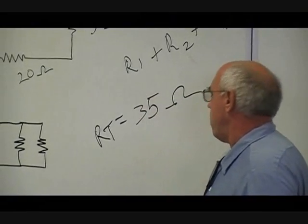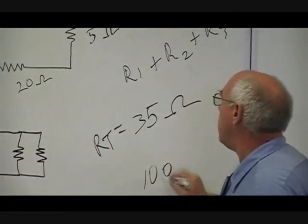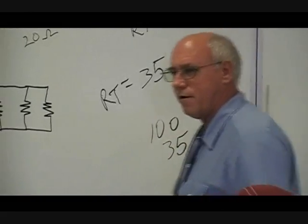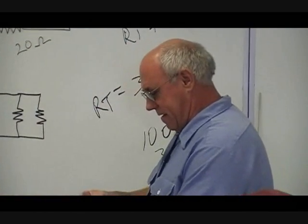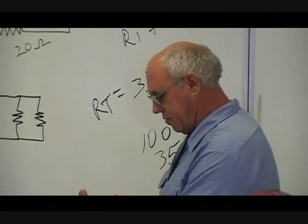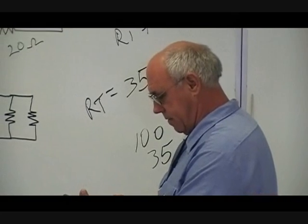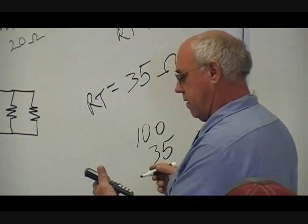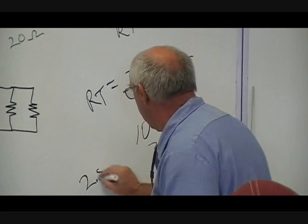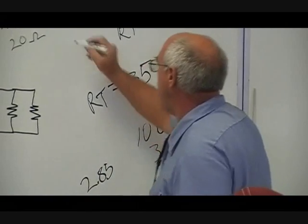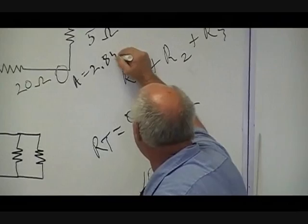Now we need to know what the current draw is. We go back to Ohm's law again. We take the E divided by the R, which would be 100 divided by 35. And this is where my calculator comes in. A smart person would have used numbers that would have come out even. I come up with, we're going to round it, 2.85 amps. So that amps draw through here, the amps would equal 2.85.